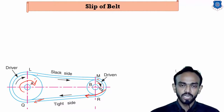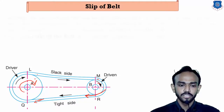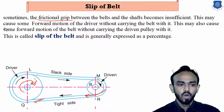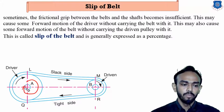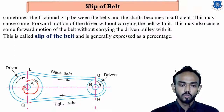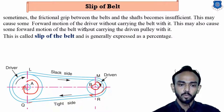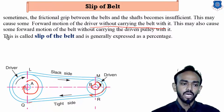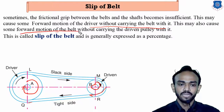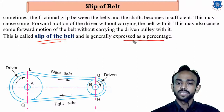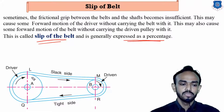Sometimes the friction grip between the belt and the pulley becomes insufficient. This causes forward motion of the driver without carrying the belt — the driver rotates but the belt does not rotate with the pulley. This can also happen between the belt and the driven pulley — the belt moves forward without carrying the driven pulley. This is known as slip of the belt, and it is generally represented in percentage.